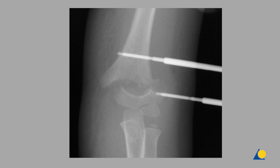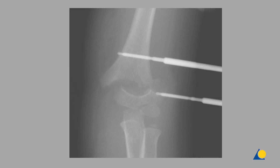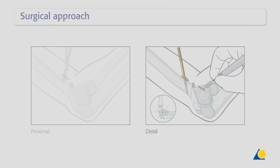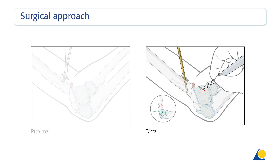If a metaphyseal fragment is large enough, the distal shunt's screw can be inserted above the physis parallel to the joint line. Clinically, a 0.5 to 1 cm skin incision is made at the planned insertion point and deepened by blunt dissection with a small artery forceps until the lateral aspect of the distal fragment can be felt.